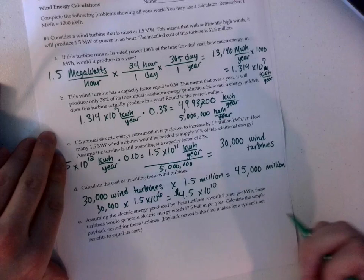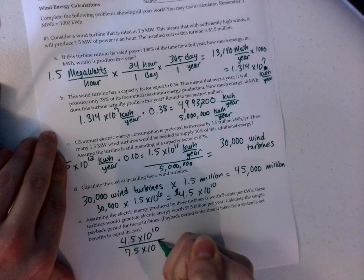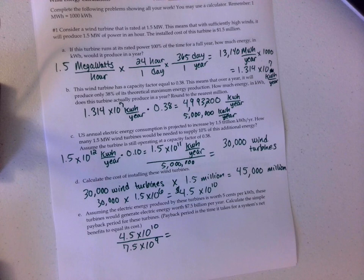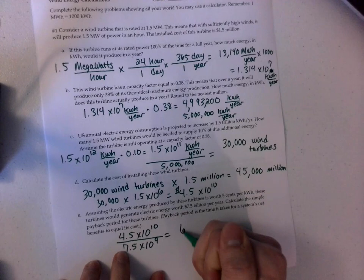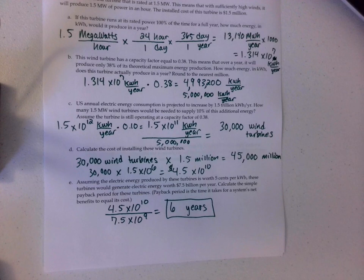I divide 4.5 times 10 to the 10th by 7.5 times 10 to the 9th. That gives approximately 6 years for payback. That's not very long considering that for a PV solar system it was around 50-something years.